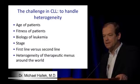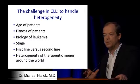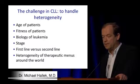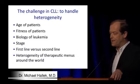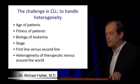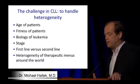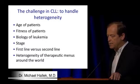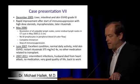The challenge of CLL is actually a beautiful one. It requires that we really look at our patient — not only the leukemia, but the fitness, the age, and the biology of the leukemia, the stage. There is a difference between first- and second-line treatment. And there is a funny heterogeneity of therapeutic menus around the world, causing some confusion, despite trials and guidelines. It's also difficult to write guidelines because everybody has their favorite thing to start with.